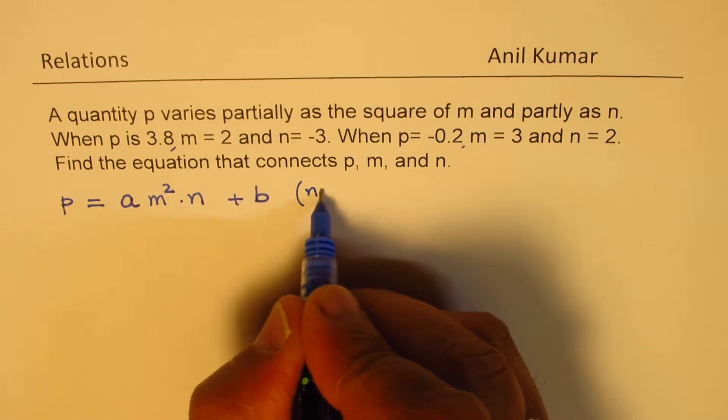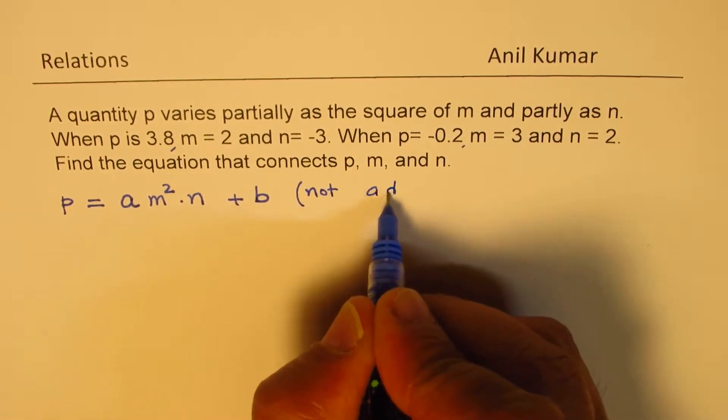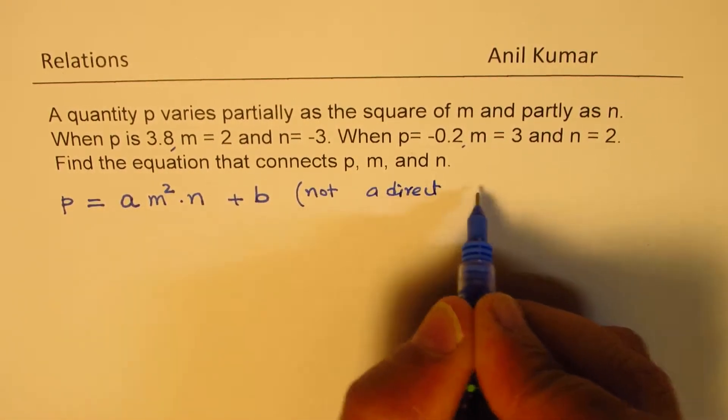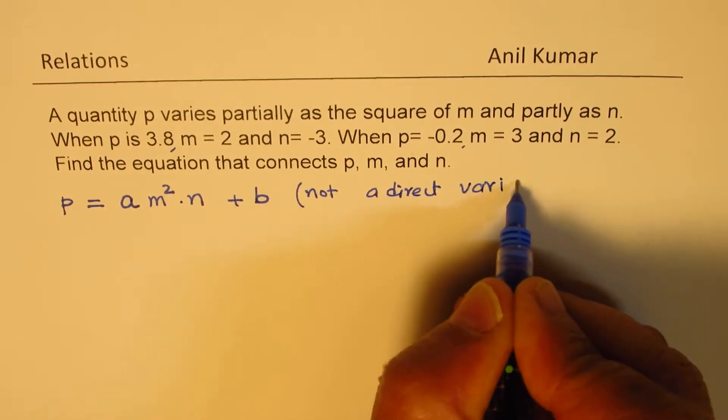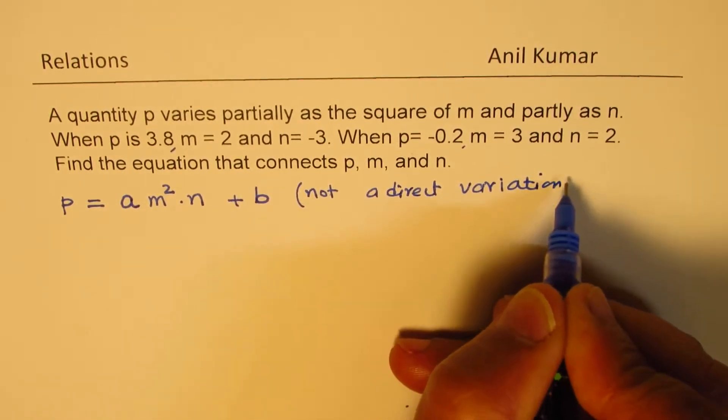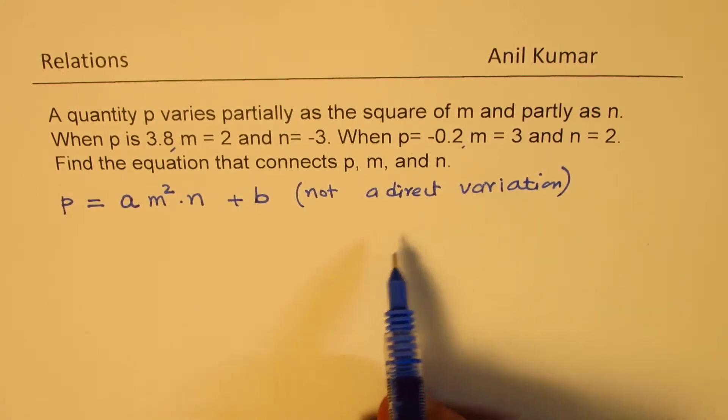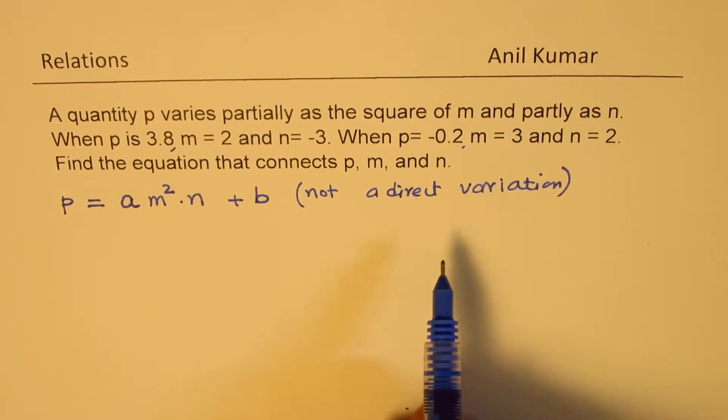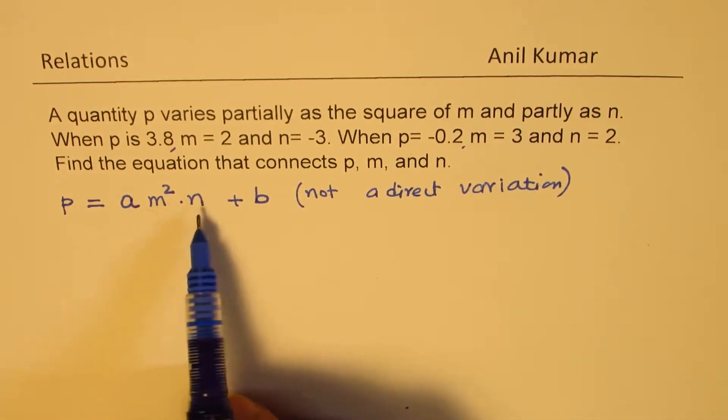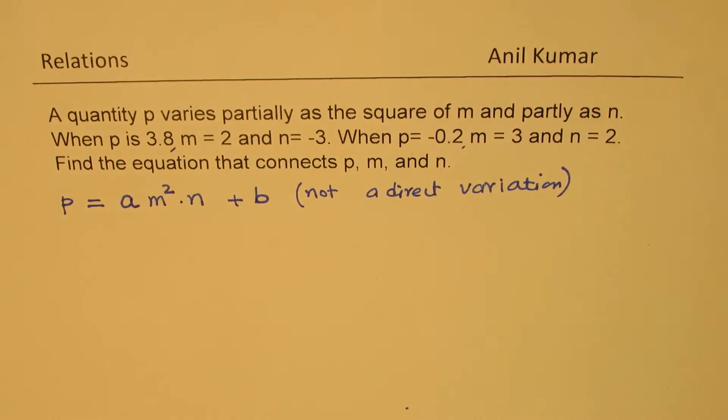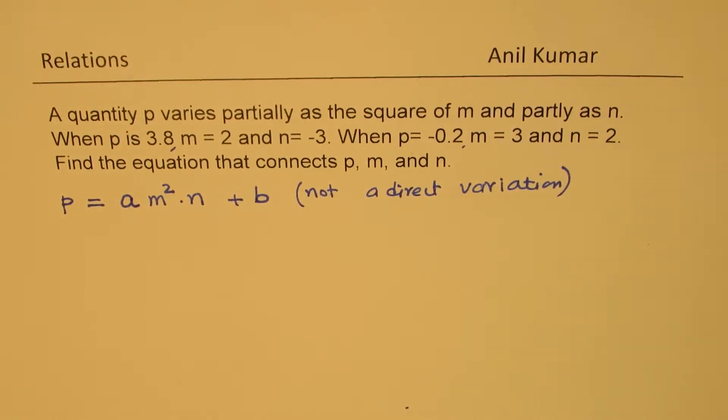Since it is not a direct variation, this is important to understand. In direct variation, the graph will go through the origin. Now partially means that if we have 0, 0, then P is not 0. That is the idea.